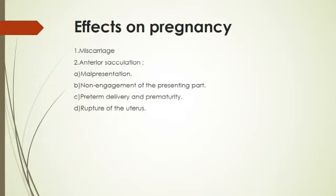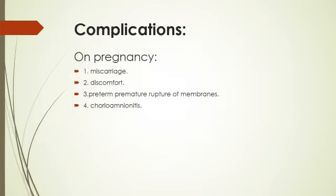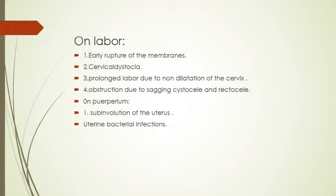Effects of incarceration on pregnancy include miscarriage, oblique presentation, non-engagement of the presenting part, preterm delivery, prematurity, and rupture of the uterus. Genital prolapse: pregnancy may occur in cases of first-degree prolapse with cystocele and rectocele, but rarely when the cervix remains outside the introitus, because cervical secretions become hostile to sperm. Complications on pregnancy include miscarriage, discomfort, premature rupture of membranes, and chorioamnionitis. On labor: early rupture of membranes, cervical dystocia, prolonged labor due to non-dilatation of the cervix, obstruction due to prolapsing cystocele or rectocele, and sub-involution of the uterus with postpartum bacterial infection.